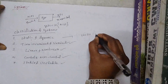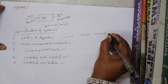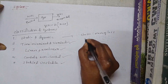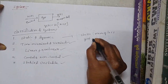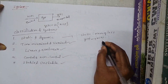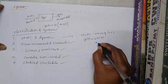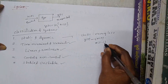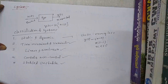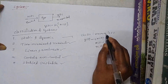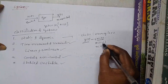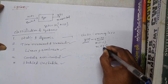Static systems are memoryless, meaning memory is not required for the system. The present output y(t) depends only on the present input, but not on past inputs or future inputs. Past input means x(t-1) and future input means x(t+1). A static memoryless system's present output depends only on the present input.